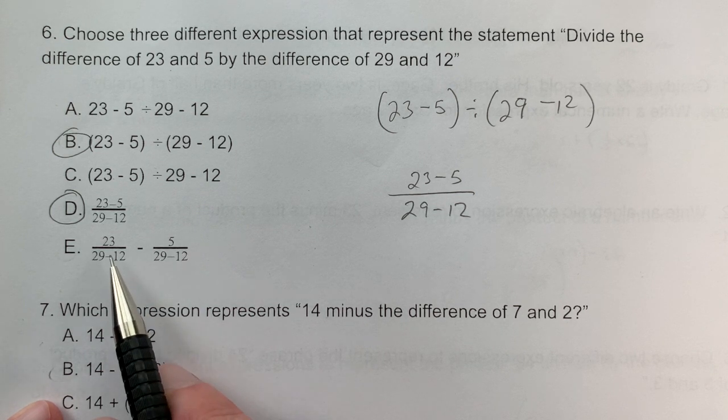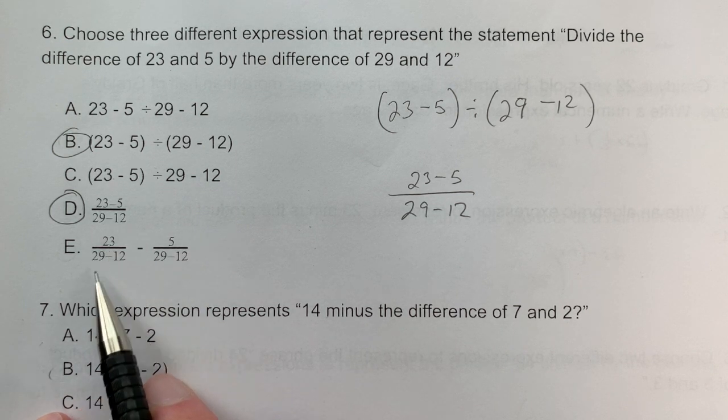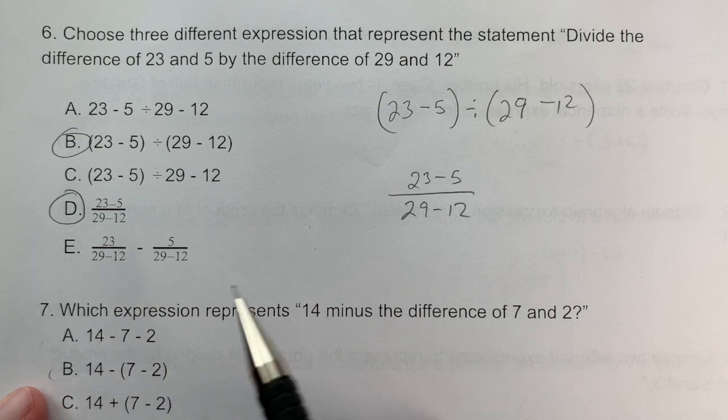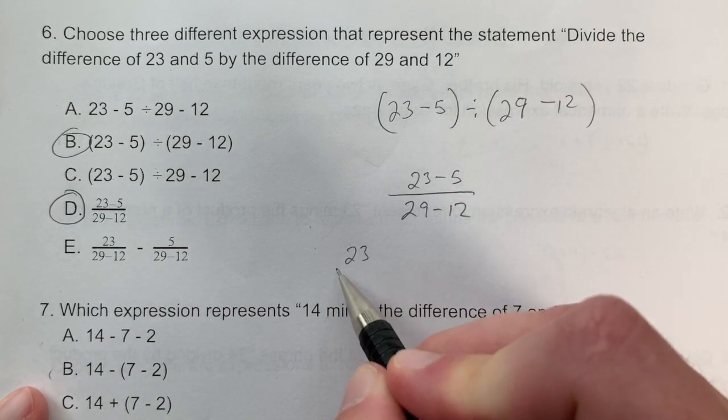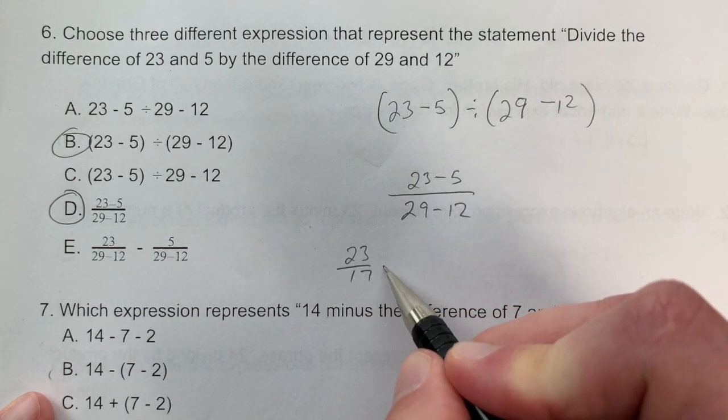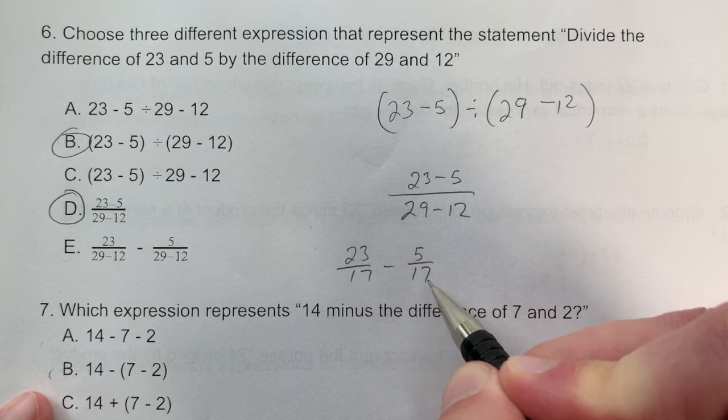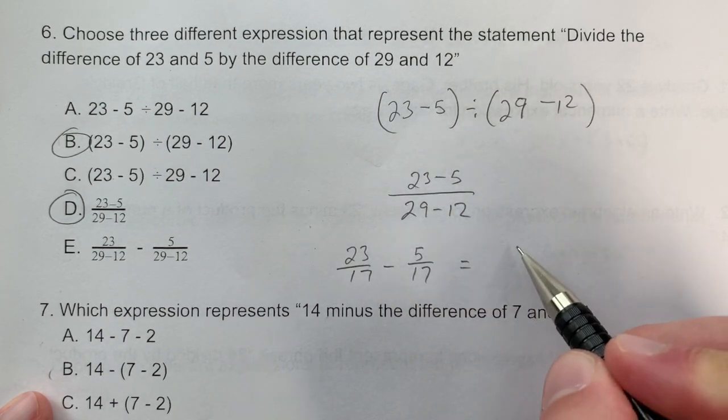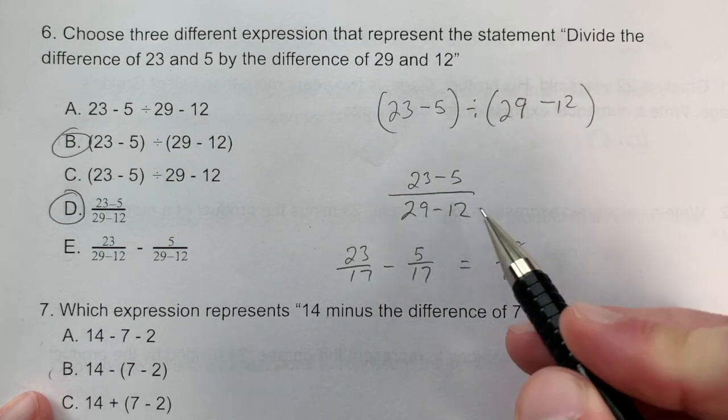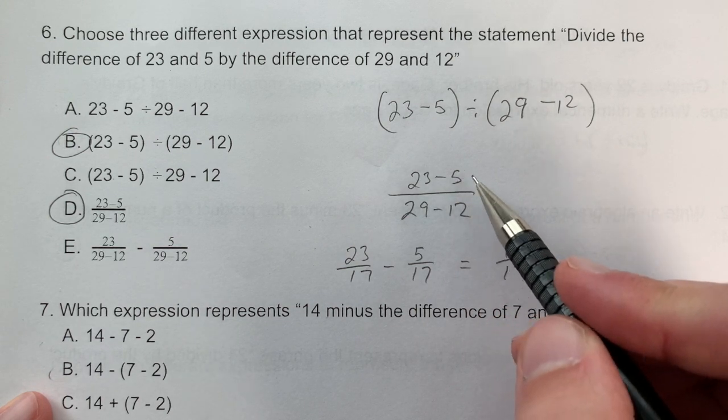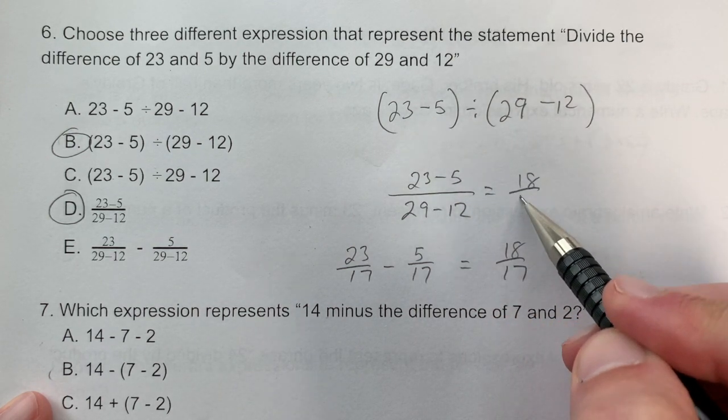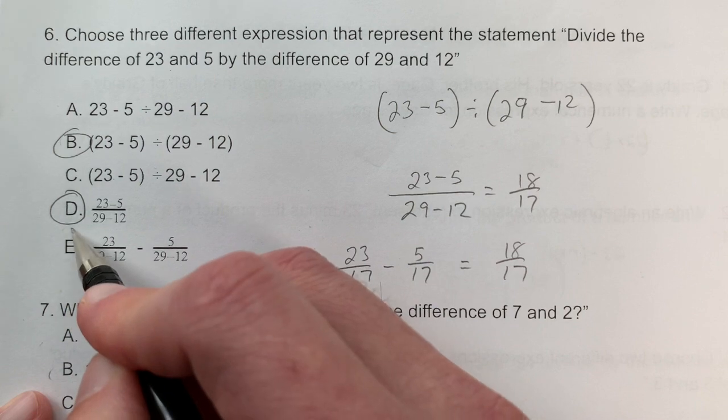For the last expression: if I have 23/17 - 5/17 and work it out, I get 18/17, which equals the other expressions. So answer E is also correct.